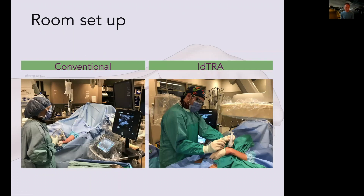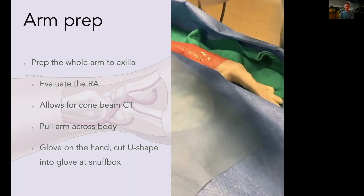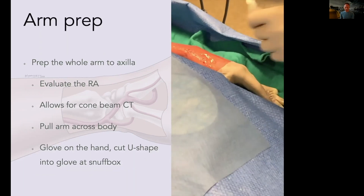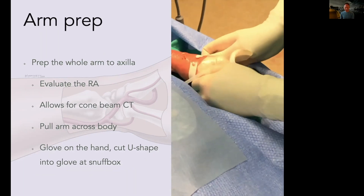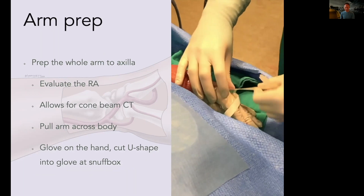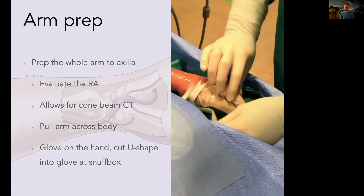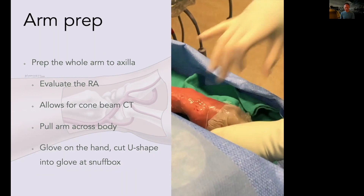This shows the room setup for conventional radial access and for distal radial access. For those who have heard me talk before: I tend to put a glove on the hand, prep all the way up to the axilla, and put a tegaderm over the bottom of the glove. This is just to stop bleeding under the glove and to avoid having to clean the hand at the end of the procedure, which is a little bothersome. You can also do cone beam CT, as you can bring the arm easily across the abdomen if you're not doing cross-body.